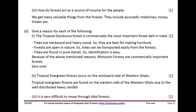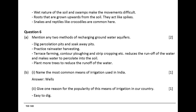Tropical evergreen forests occur on the windward side of the Western Ghats due to the well-distributed heavy rainfall. It is very difficult to move through tidal forests. The wet nature of the soil and swamps make movement difficult. Roots grow upwards from the soil and act like spikes. Snakes and reptiles like crocodiles are common here.